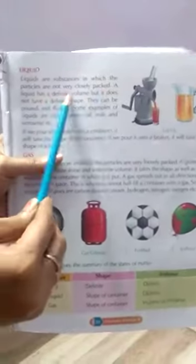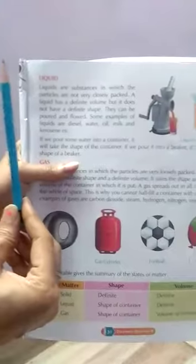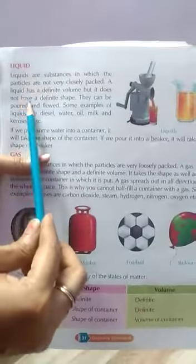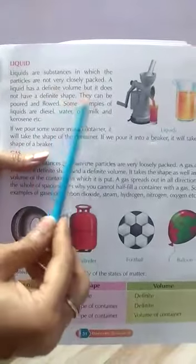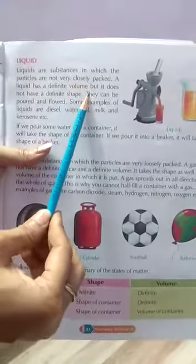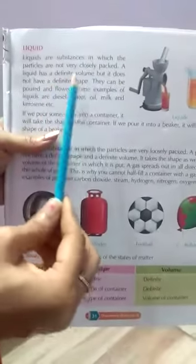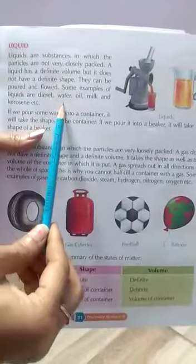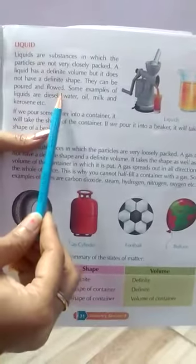Liquid. Liquids are substances in which the particles are not very closely packed. Liquid has a definite volume but it does not have a definite shape. Liquid can be poured and flowed.